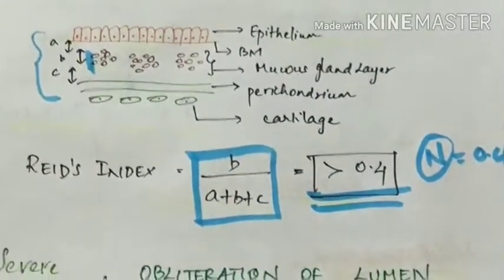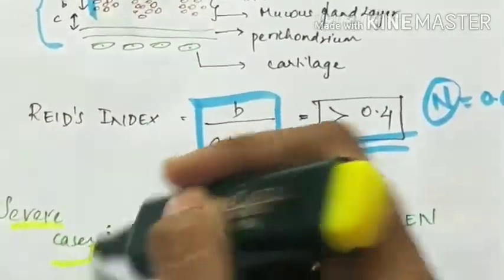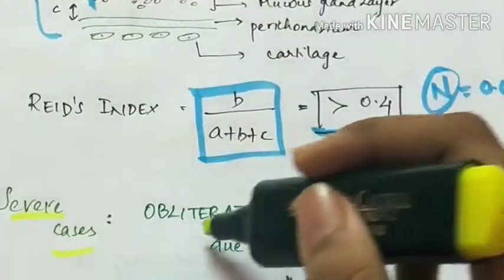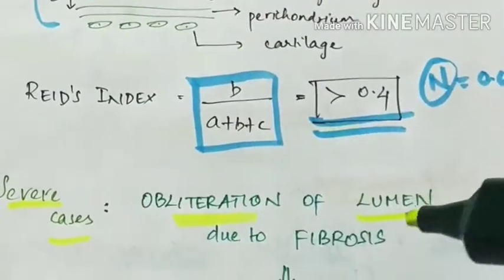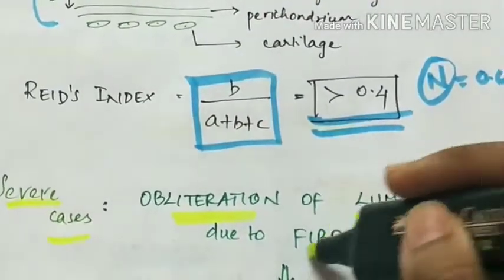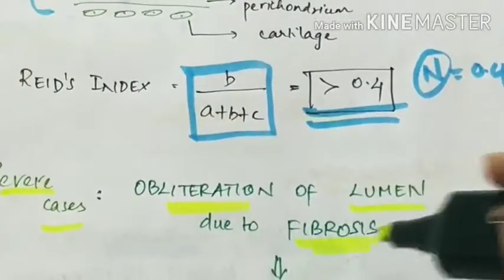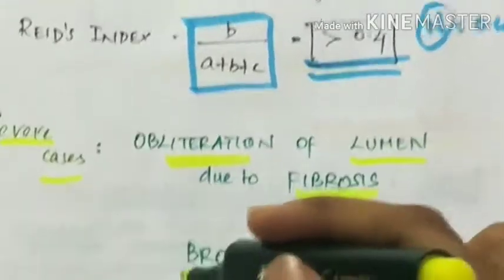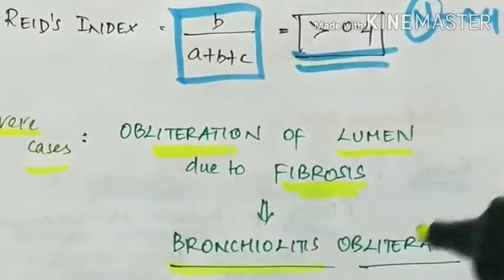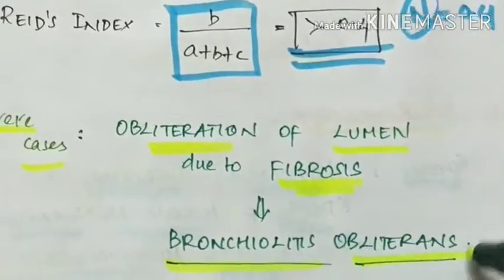In severe cases of chronic bronchitis, there is obliteration of the lumen due to fibrosis. This condition is called bronchiolitis obliterans.